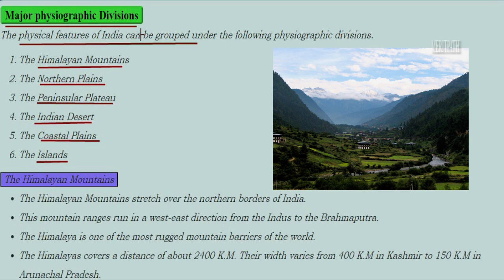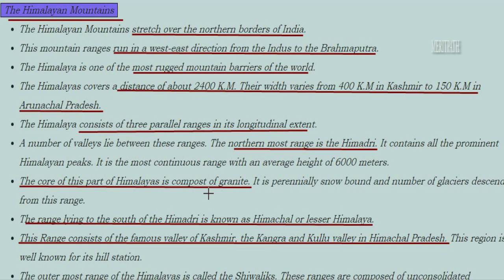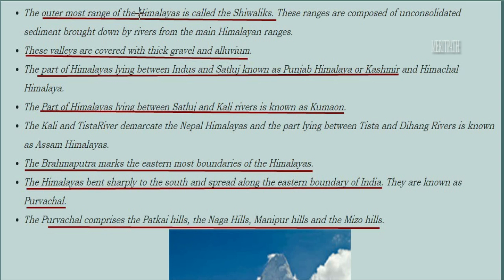The Himalayan mountains stretch over the northern borders of India. These mountain ranges run in a west-to-east direction from the Indus to the Brahmaputra region. The Himalayas are one of the most abrupt mountain barriers of the world. The outermost range of the Himalayas is known as the Shivaliks. These ranges are composed of unconsolidated sediments brought down by rivers from the main Himalayan ranges, and their valleys are covered with thick gravel and alluvium.